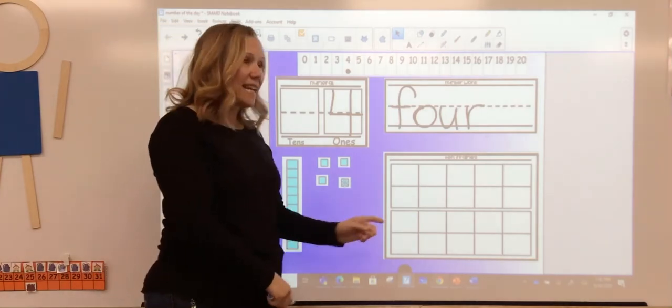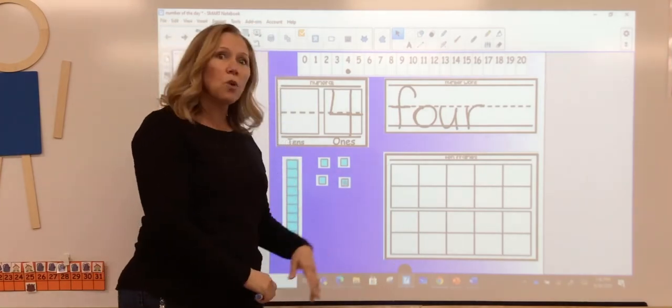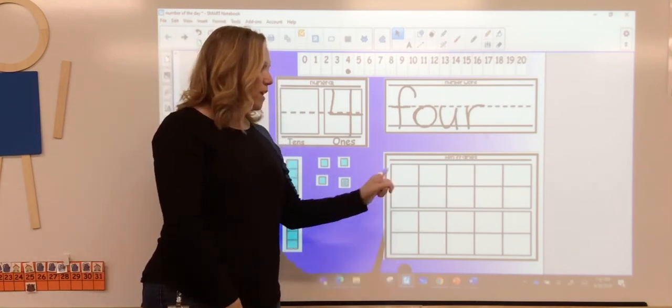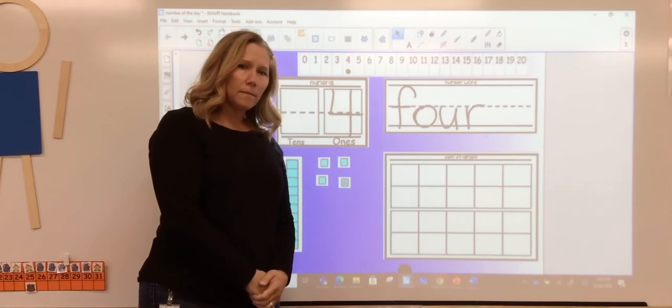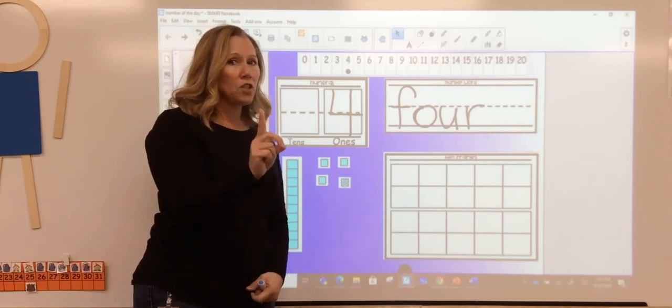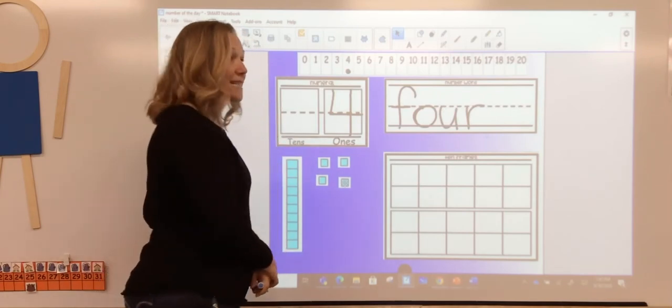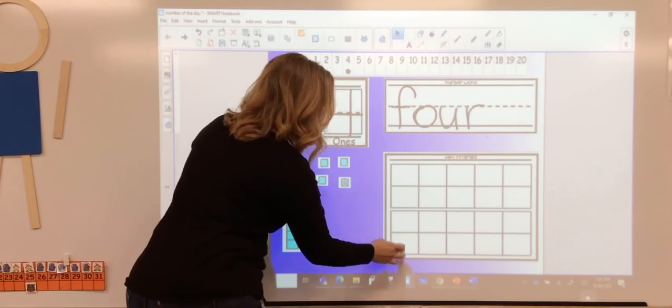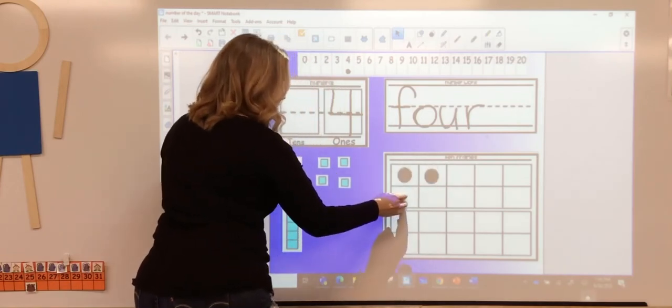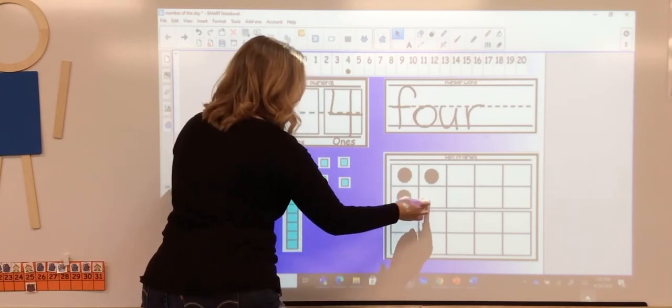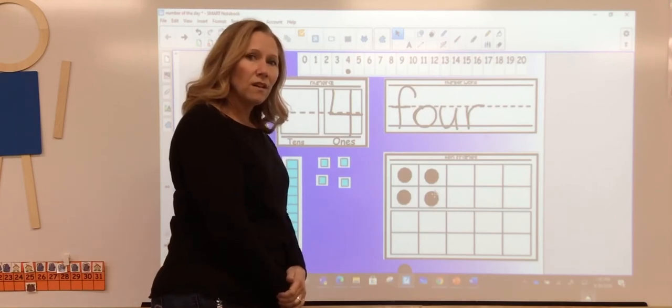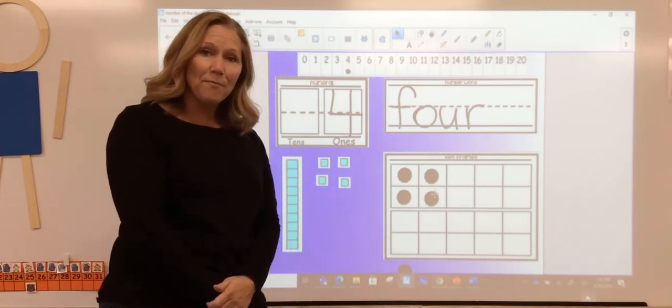Now we need to count out four circles into our ten frame. Can I put two circles in one box? Nope. You're right. I can't. I can only put one circle in each box. So let's count with me. One, two, three, four. How many did we count? Four. That's right. Good job friends.